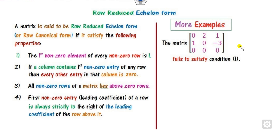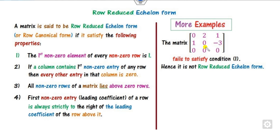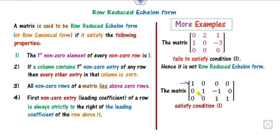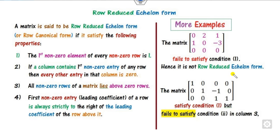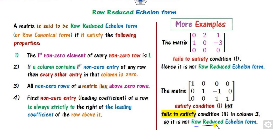Let us look at some more examples. Is this a row reduced echelon form? No, because the first non-zero element must be 1, and it fails to satisfy that first property. Therefore it is not row reduced. Is this one row reduced? The first property is satisfied for all rows, but in one column the element above is non-zero, failing the second condition. Therefore it is not row reduced.